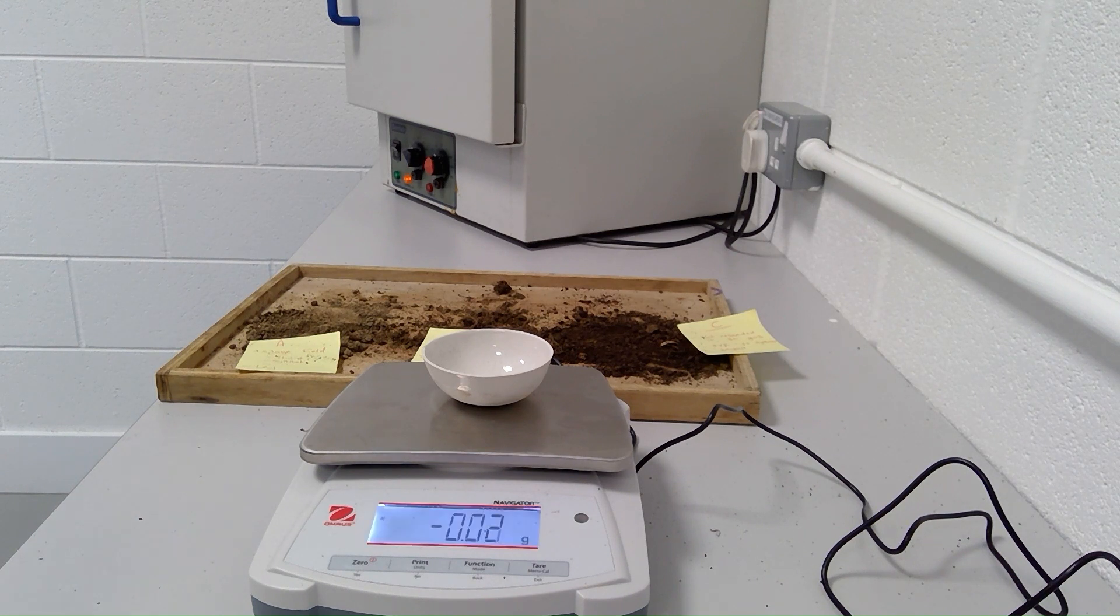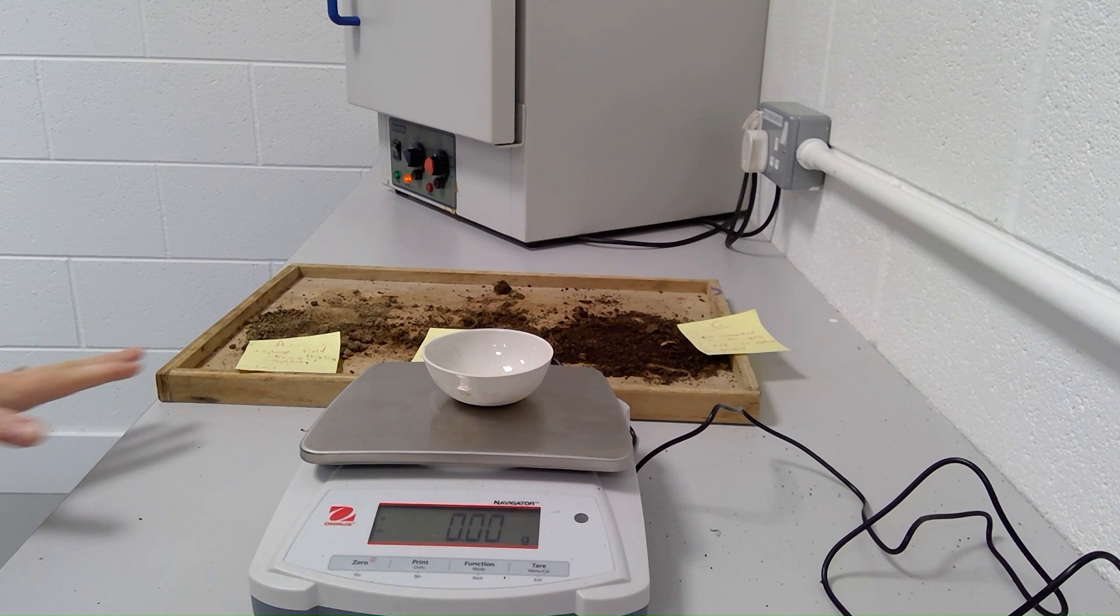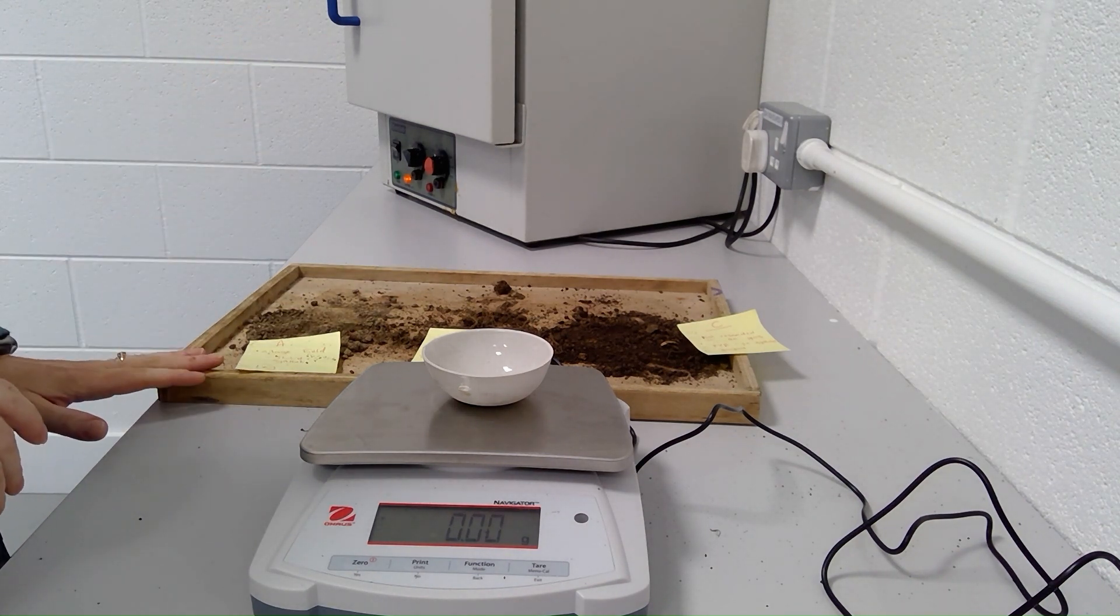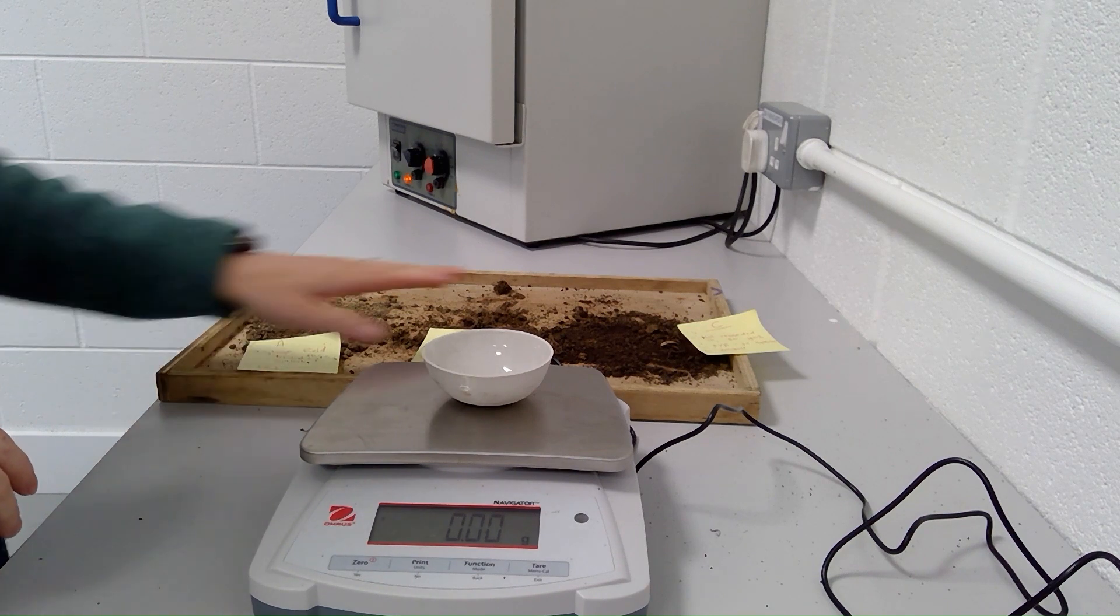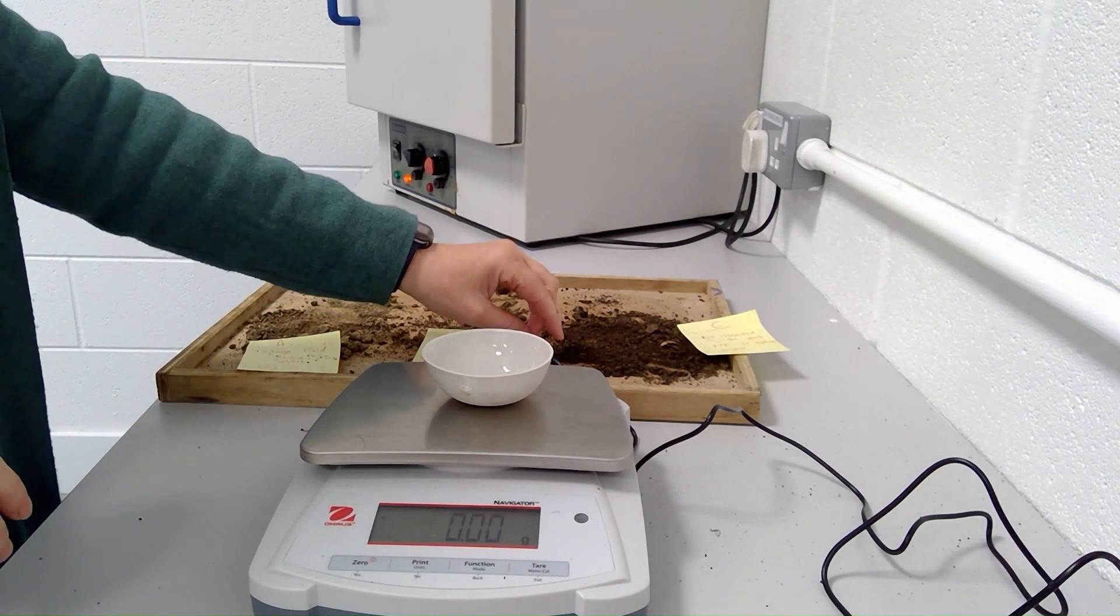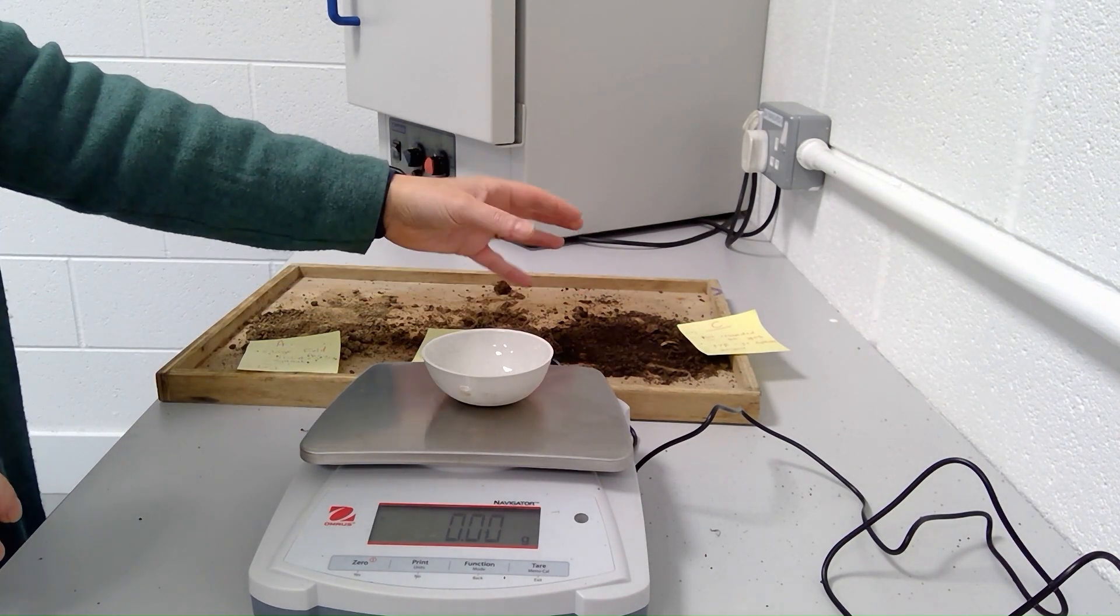Once the mass remains constant, then I know the sample has dried out and is ready to use in the next step. An interesting note is I could calculate the percentage water content of the soil sample, and I would expect it to be higher in the soil that is darker because I think that soil has a higher organic matter content.